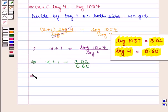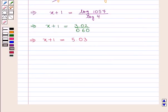Dividing 3.02 by 0.60, we get 5.03. So x+1 = 5.03. On simplifying further, we get x = 5.03 - 1, which implies that x = 4.03.